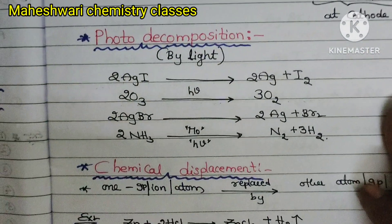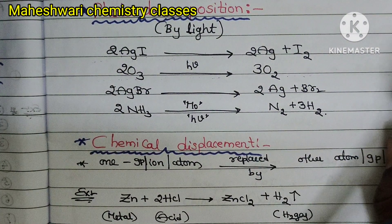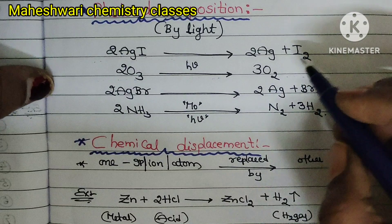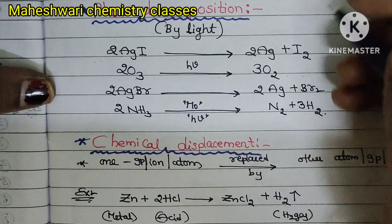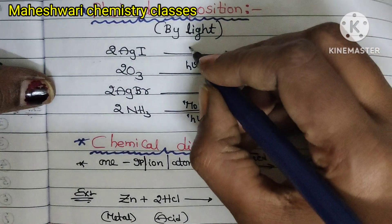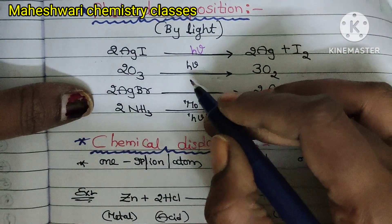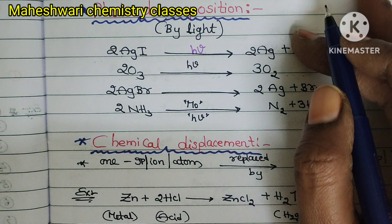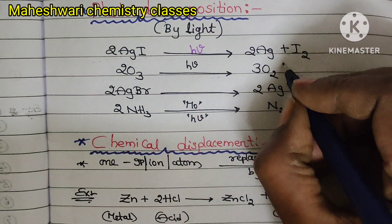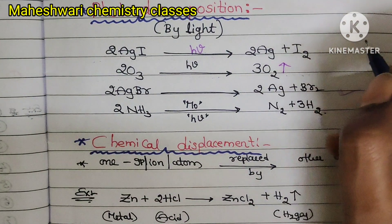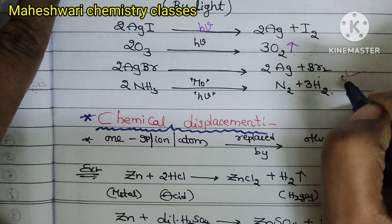Next, photodecomposition. Silver powder undergoes photodecomposition, releasing silver and hydrogen gas. Light energy drives the reaction — H2 is equal to light energy. Ozone also undergoes photodecomposition, releasing oxygen gas. Silver bromide releases silver and bromine.